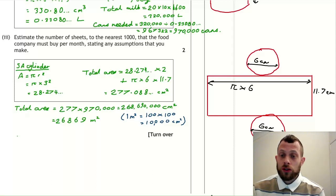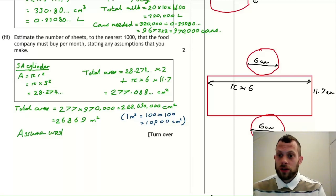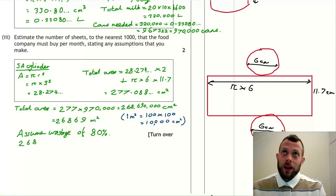So we'll assume that only 80% of the material gets used. And it says we should state any assumptions that we make, so we'll write that down. Now I've said here assume wastage of 80%. I think I meant to say assume that only 80% of the material is used. It's 20% is the wastage. It's clear what we meant.